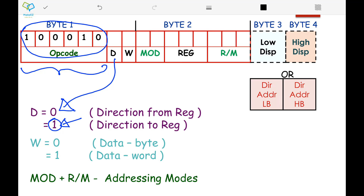Similarly, if the data which you are handling using this instruction is a byte, then w will be 0. If it is a word — that is 16-bit — then it is going to be 1.